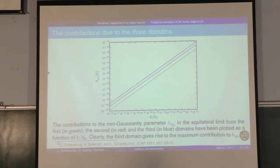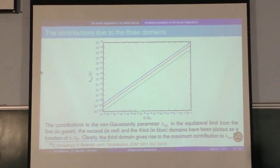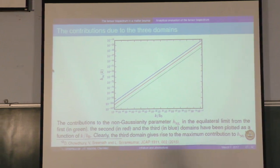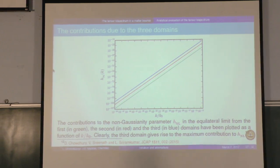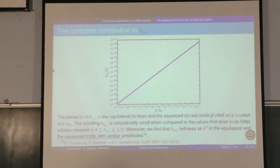How does it behave? What has been plotted is H_NL versus k over k_0. k_0 is the fundamental scale; cosmological scales are much, much smaller than the fundamental scale of interest, which is roughly the Planck scale. In contrast to de Sitter, where H_NL is strictly constant and scale invariant, it behaves like k-squared in a matter bounce scenario. Secondly, H_NL is extremely small compared to de Sitter. And there is another important point.